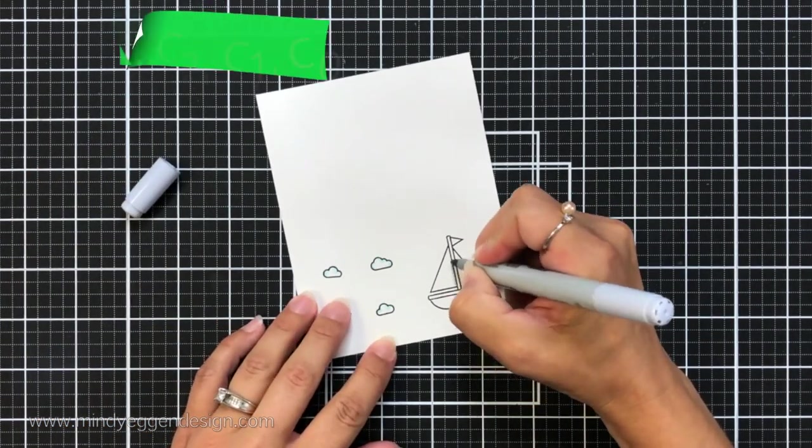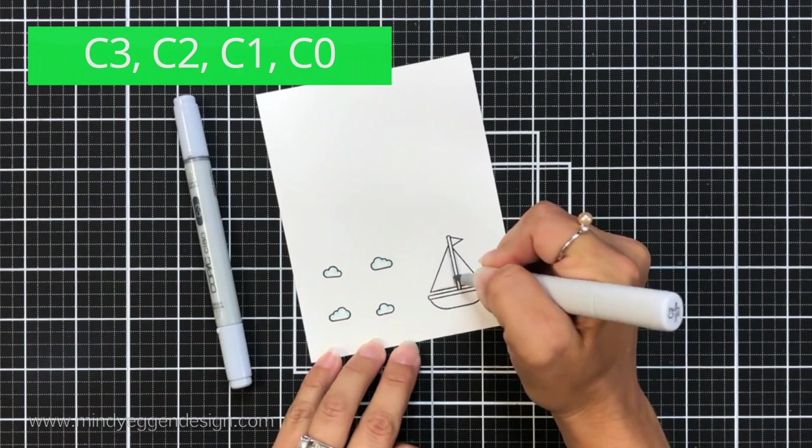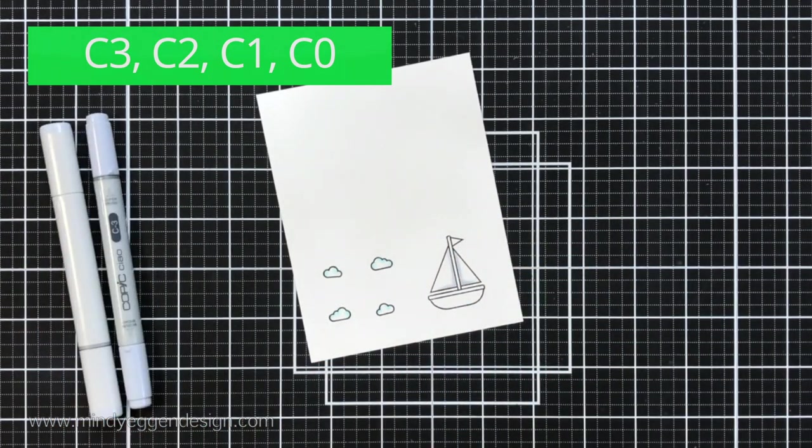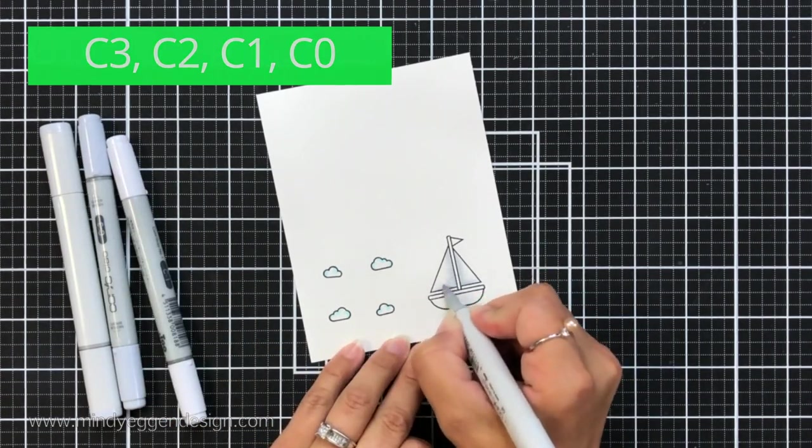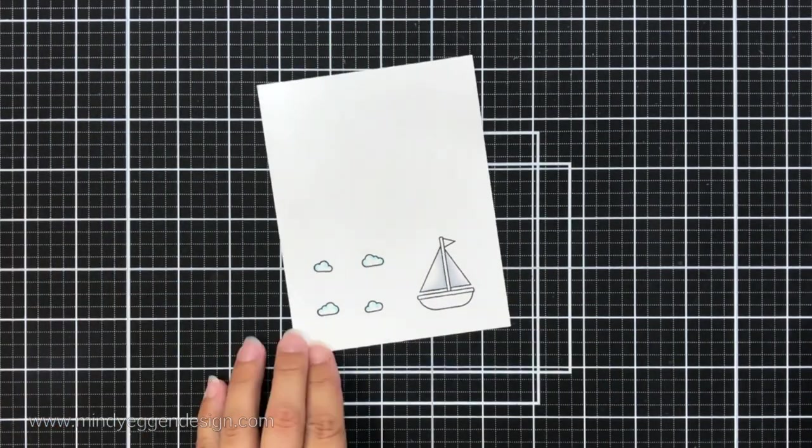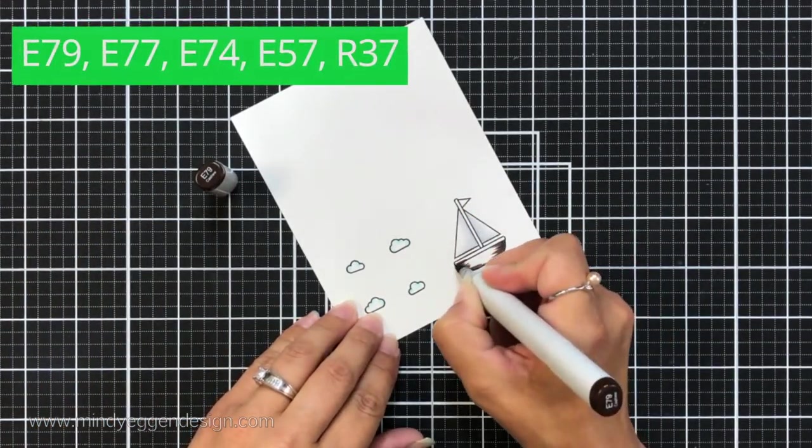For my clouds I just colored around the poofiness of it with a B00 just to give it a little bit of color. On the sail I am using cool grays so I have C3, C2, C1, and C0 just coloring out from that pole going outwards so it gives just a little bit of dimension to it.